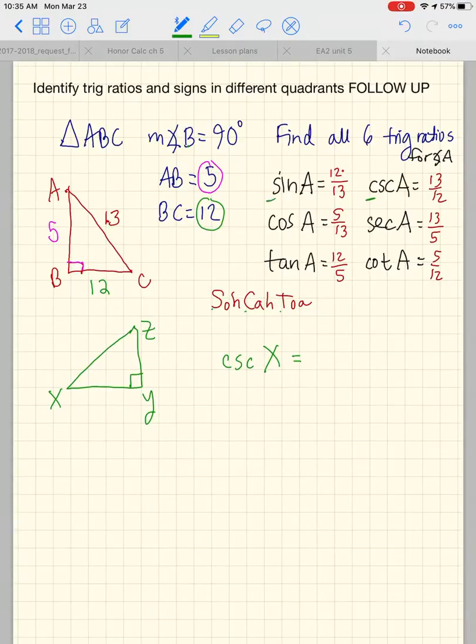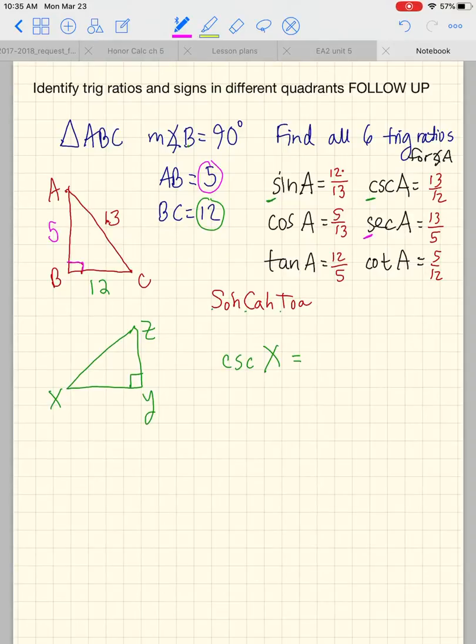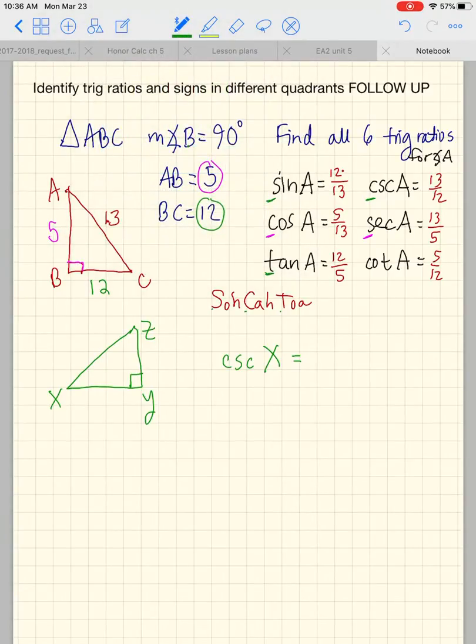Cosecant is the reciprocal of sine. C goes with s, s goes with c. Secant is the reciprocal of cosine. S goes with c, and c goes with s. It's just something I would use when I was your age to try to remember the difference. And tangent and cotangent are reciprocals. That one's not as hard to remember.